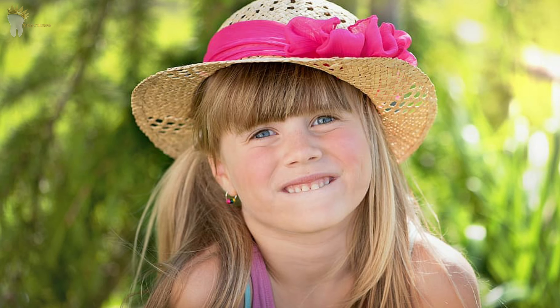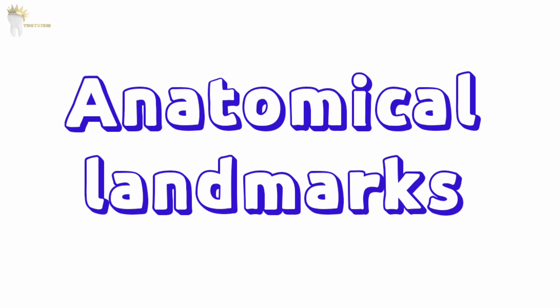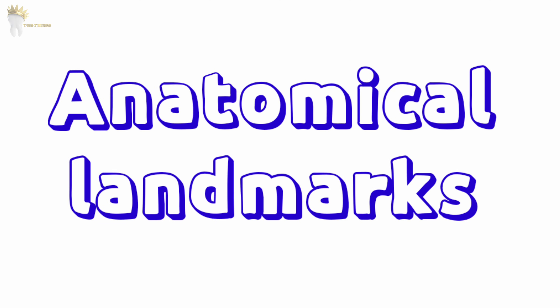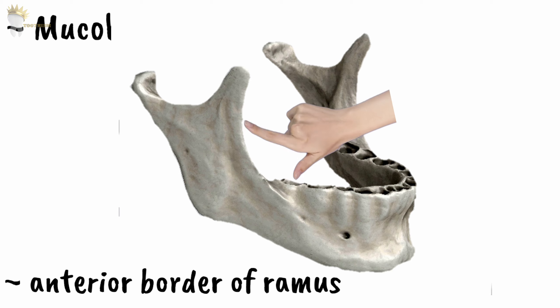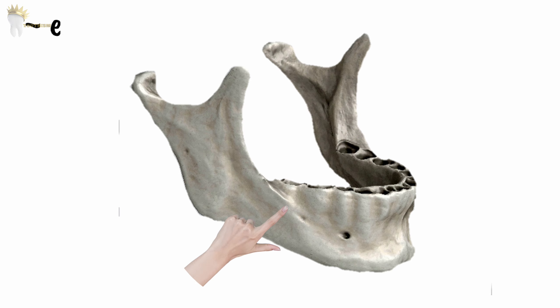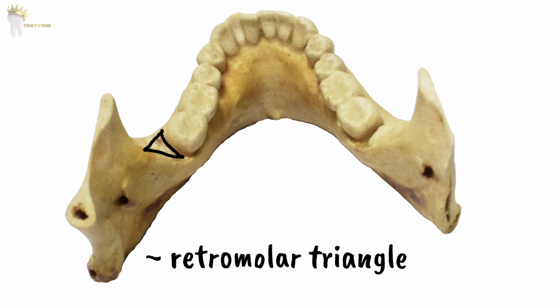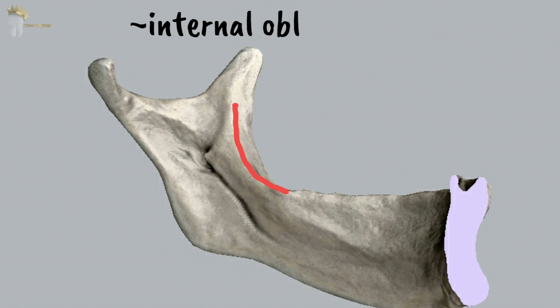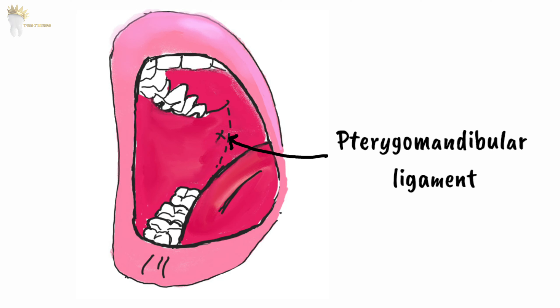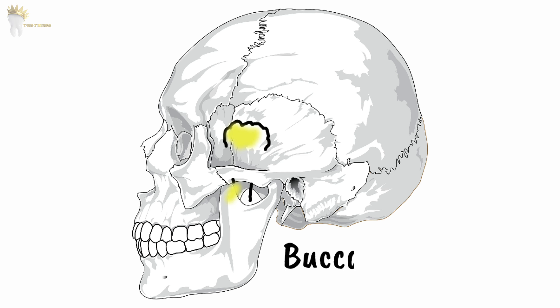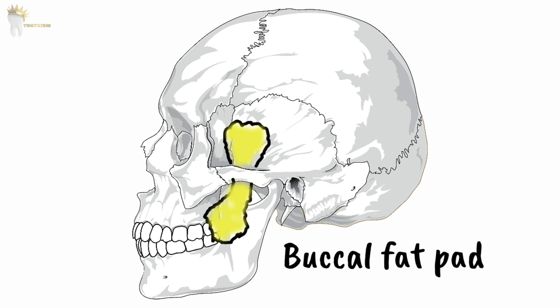A second contraindication is a very young child or mentally handicapped adult or child, as they are likely to bite their lip or tongue. The anatomical landmarks that guide us, palpated before needle insertion, include the mucobuccal fold, anterior border of the ramus of the mandible, external oblique ridge, retromolar triangle, internal oblique ridge, pterygomandibular ligament, buccal fat pad, and pterygomandibular space.